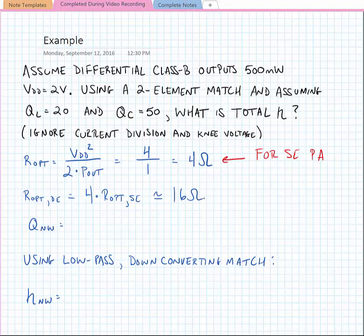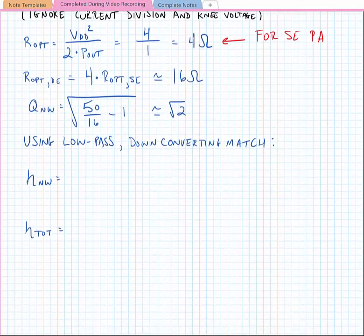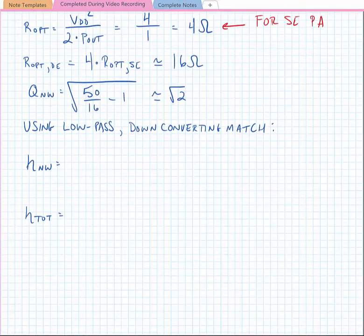So we can find our network quality factor as we did before. The square root of 50 divided by 16 minus 1, which is approximately equal to the square root of 2.